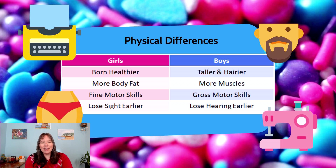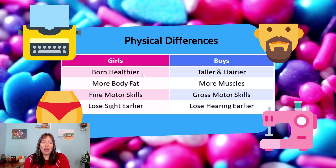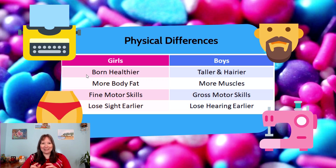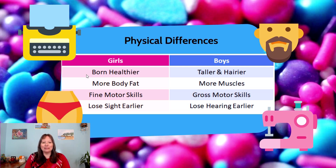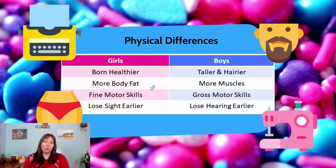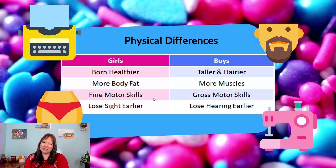Girls tend to be born healthier and stay healthier up until about age six, because of embryonic development — girls don't have to grow a penis, and by default all embryos start off as female. They tend to be born with slightly more mature respiratory, digestive, neurological, and circulatory systems. Girls also tend to have more body fat, because of the role of estrogen, which makes it important for girls and women to put on body fat in areas like the hips. This may be somewhat biologically driven but also somewhat socialized.